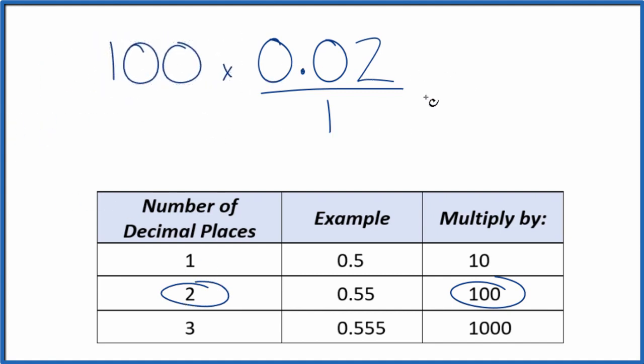100 times 0.02, that's just 2. So we have our whole number. But we can't just multiply the numerator by 100. We also have to multiply the denominator by 100. Because 100 divided by 100, that's just 1. So we're multiplying by 1, we're not changing the value. 100 times 1, that gives us 100.